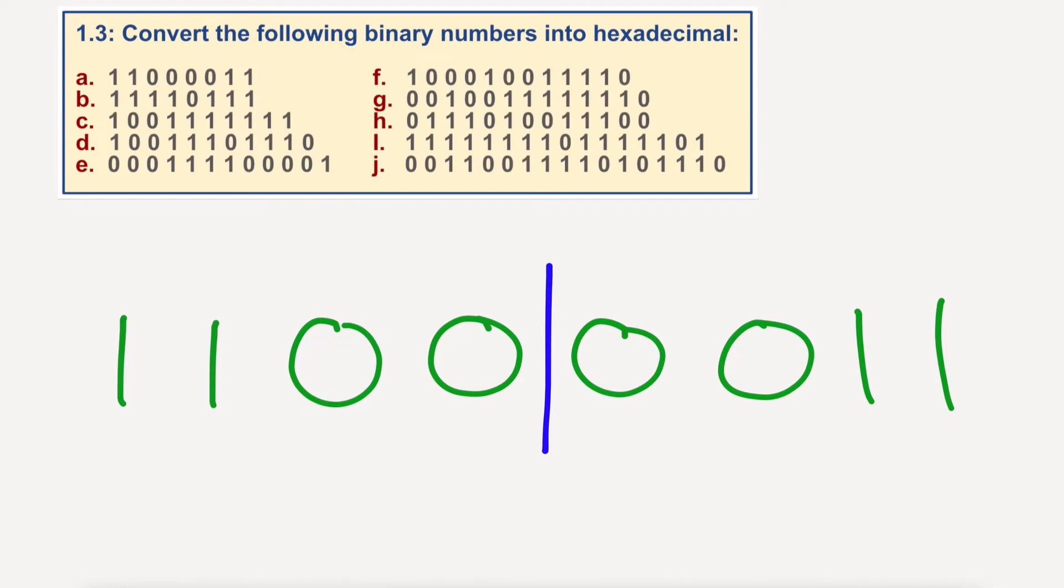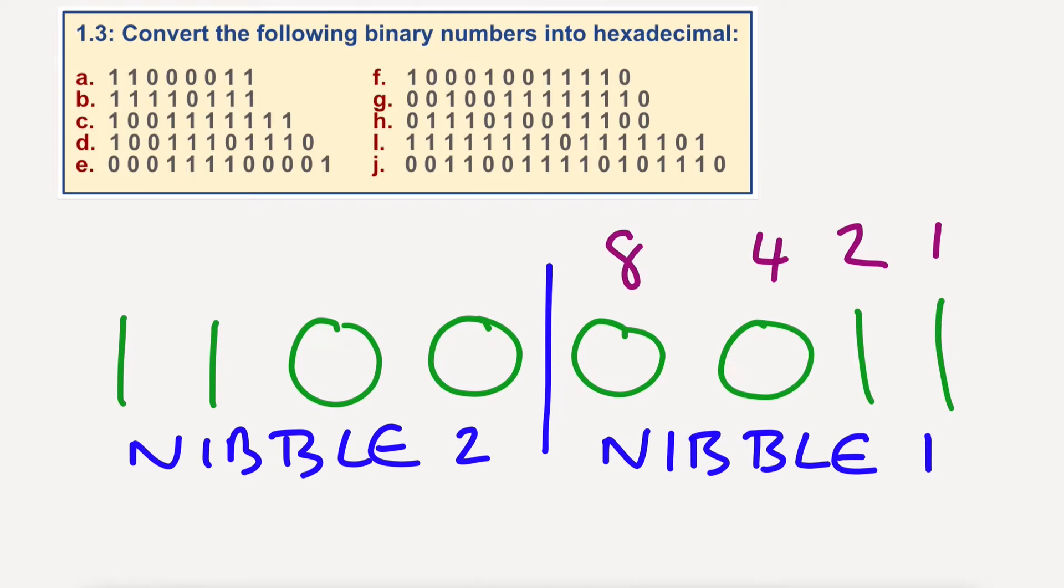So what we're going to do is we're going to turn these into two groups of four. So we're going to split it down the middle. These things are called, four bits together are called nibbles. Nibble 1 and nibble 2. Okay, and it works in the same way as before, where obviously it's binary, so we're doubling our numbers. 1, 2, 4, 8. 1, 2, 4, 8. The maximum number being 15, of course, because we're working from base 2 into base 16.